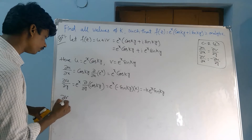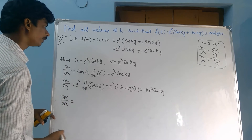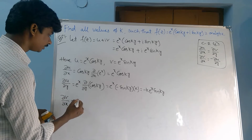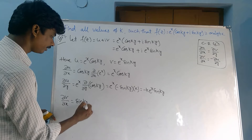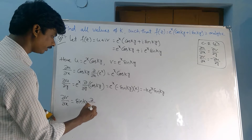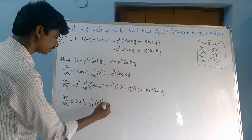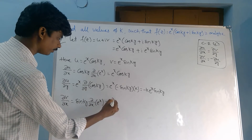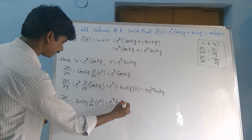Next, ∂v/∂x: differentiating e^x with respect to x while sin(ky) is constant gives ∂v/∂x = e^x · sin(ky).